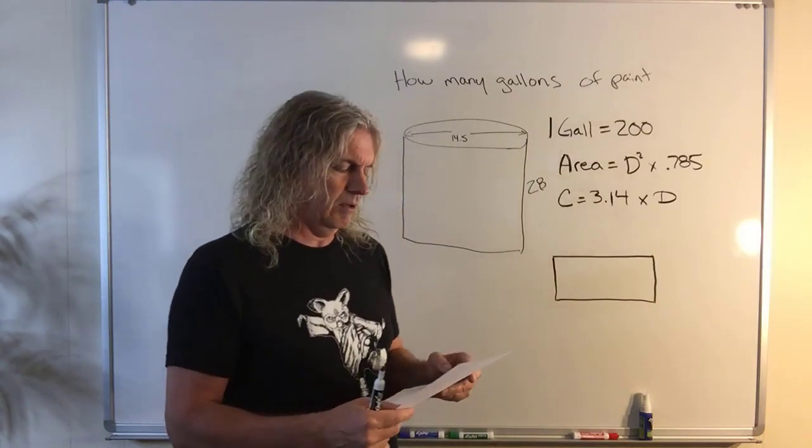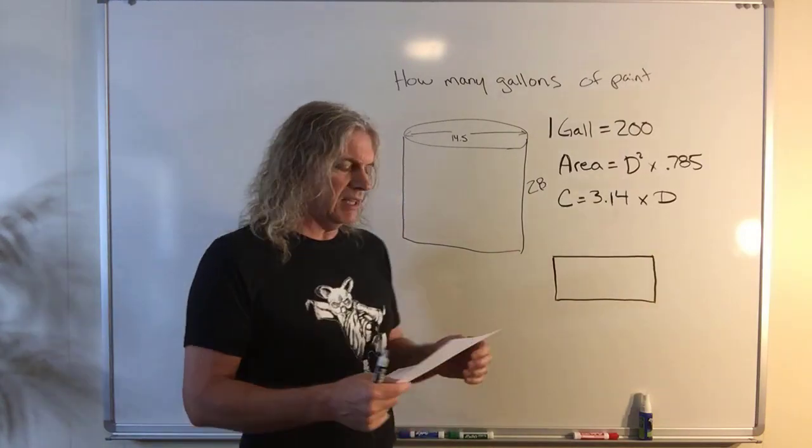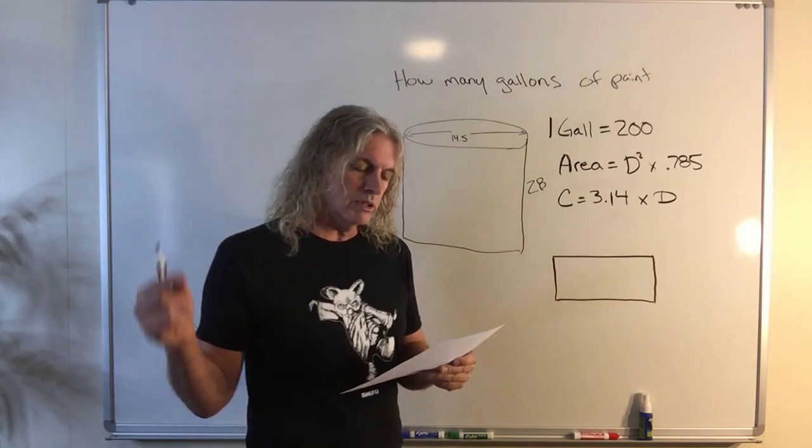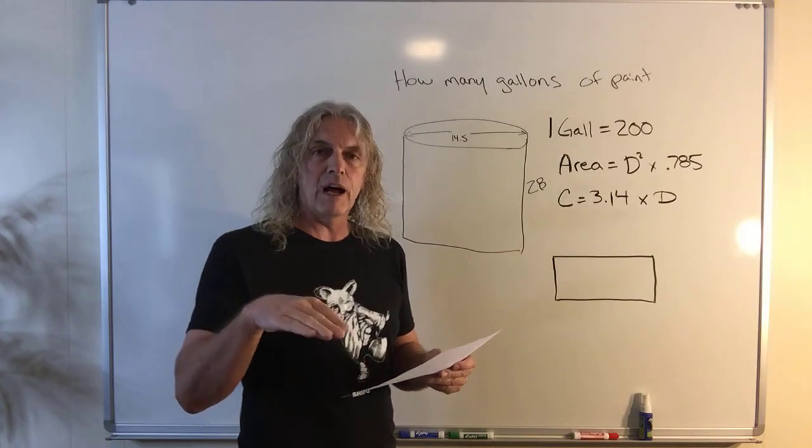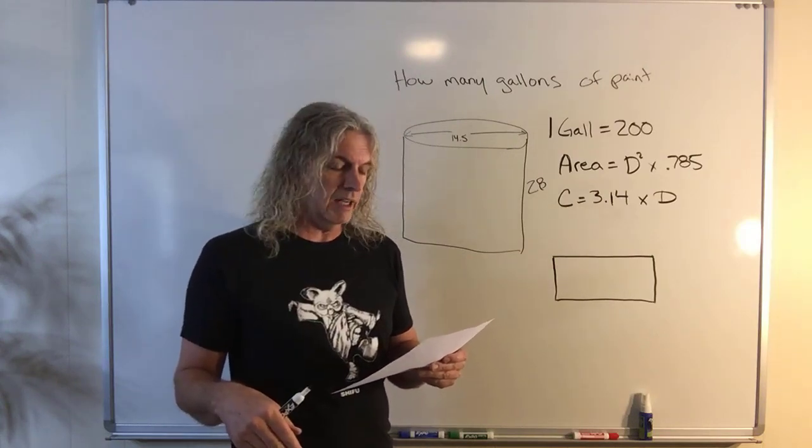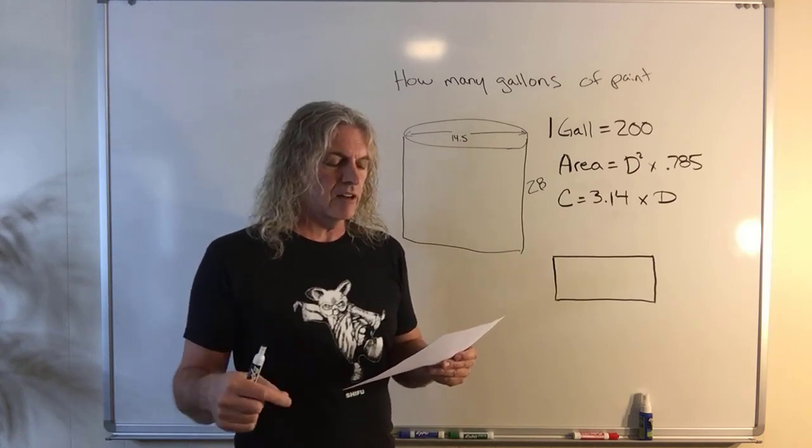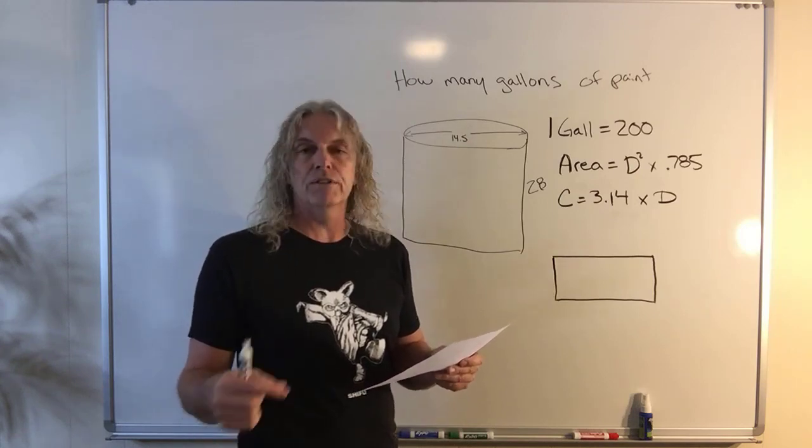I'm going to go ahead and read it out for you here. The question says, how many gallons of paint are required to cover the outside perimeter and the top of a cylindrical tank that is 28 feet high, whose diameter is 14.5 feet. Each gallon of paint covers 200 square feet of surface.